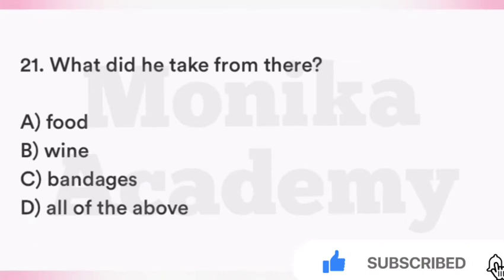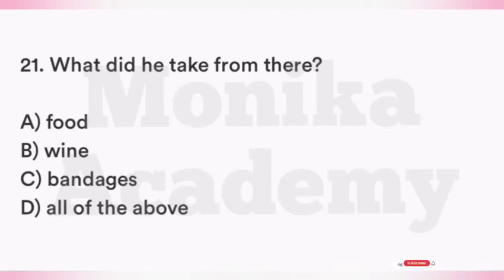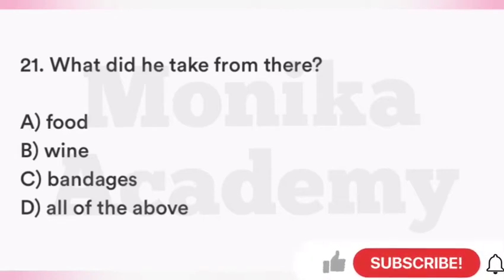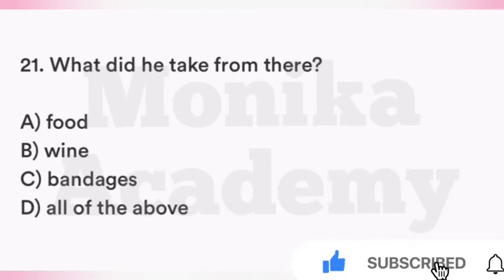Question 21: What did he take from the theatrical company shop? Option A: Food. Option B: Wine. Option C: Bandages. Option D: All of the above. The correct answer is C, bandages — Griffin ने theatrical company shop से bandages लिए.